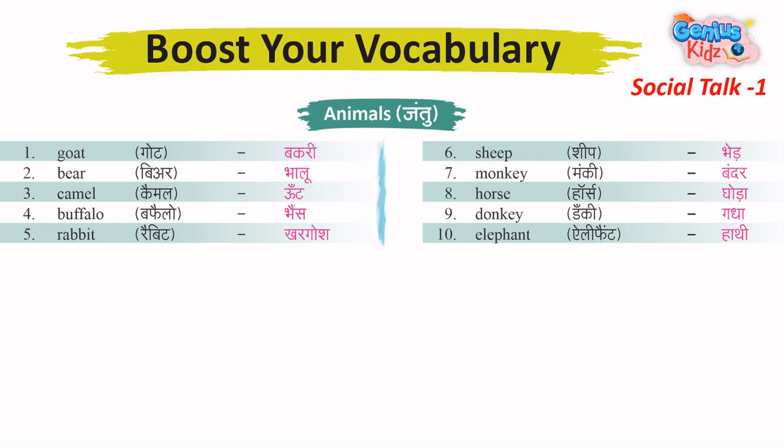Animals: 1. Bear – Bhaloo. 2. Camel – Oat. 3. Buffalo – Bands. 4. Rabbit – Khargosh.